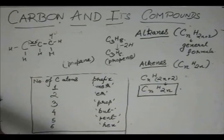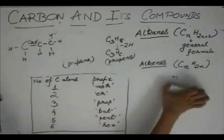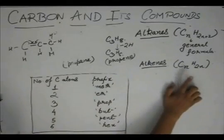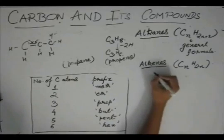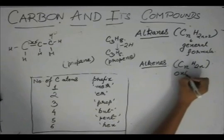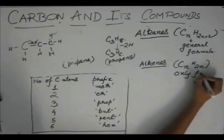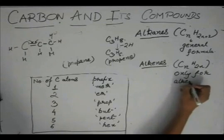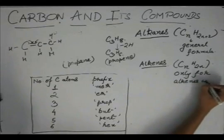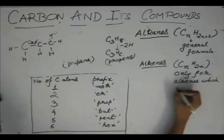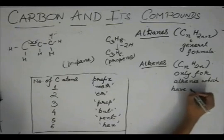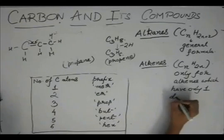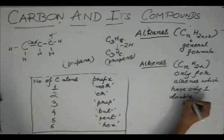Remember this: the formula CNH2N is valid only for alkenes which have only one double bond.